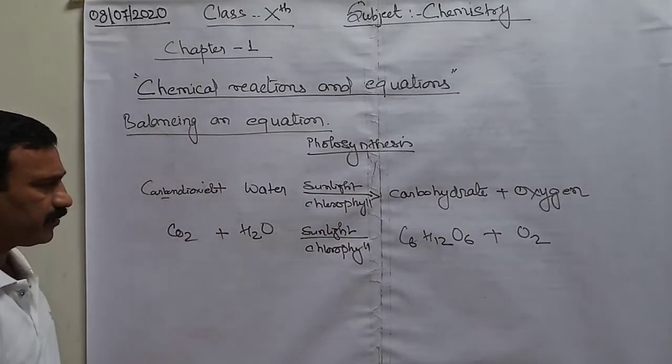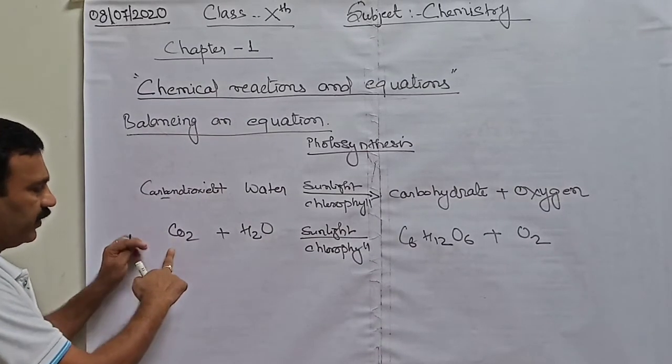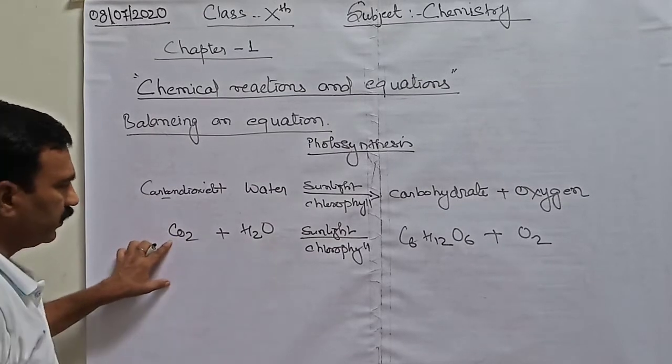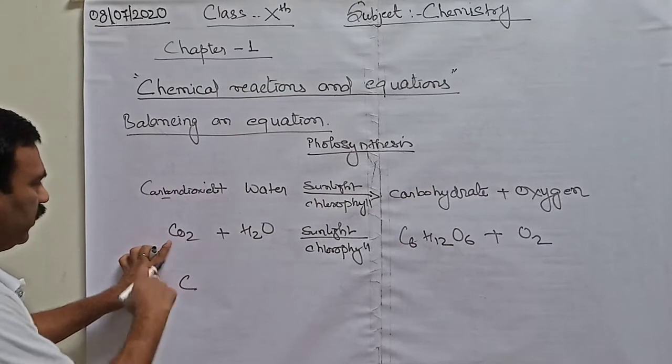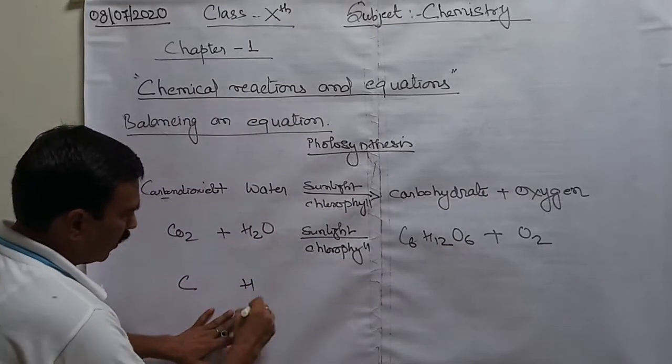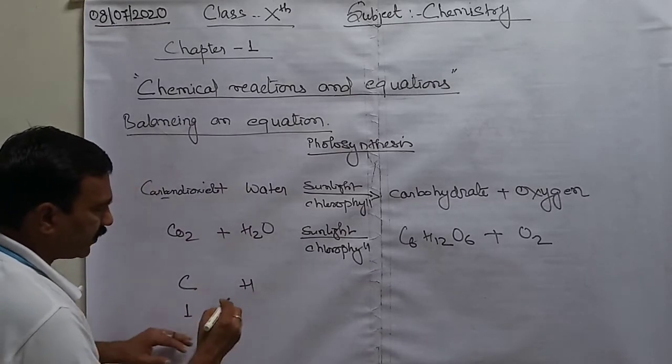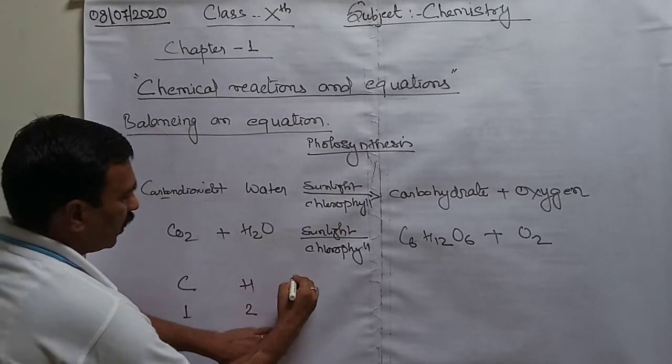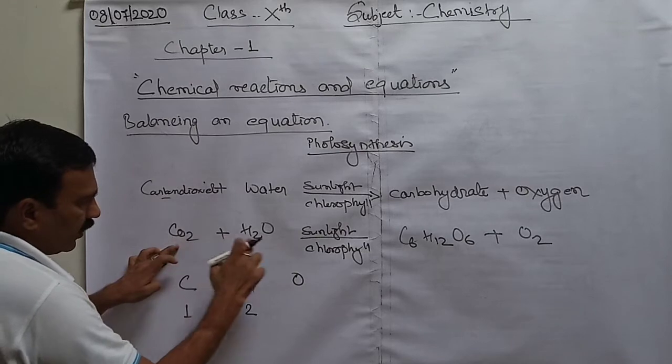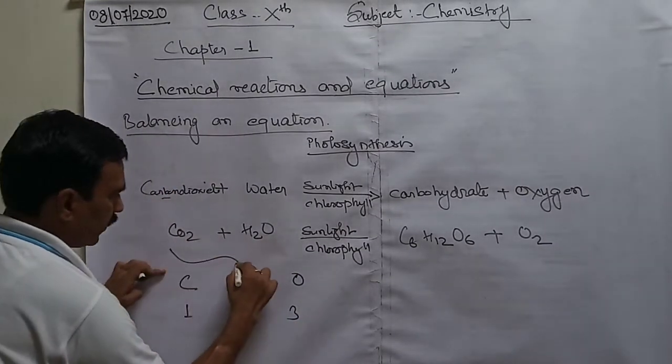Now, if you consider this equation, see how many atoms of carbon are there on the left side. There are one and only one. There is only one atom of carbon. In the same way, if we talk about hydrogen, there are two atoms of hydrogen on the left side. And the third component is oxygen. Two atoms here and one atom here. Three atoms are there on the reactant side.